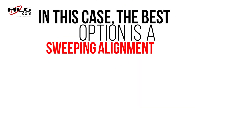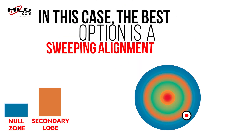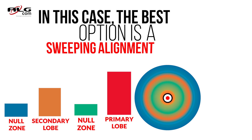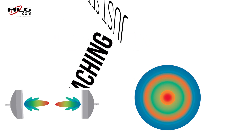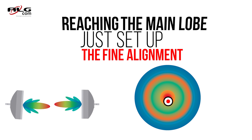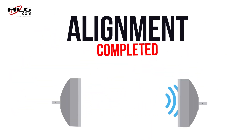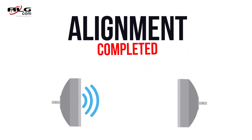In this case, the best option is a sweeping alignment, where you can reach the main lobe. After reaching the main lobe, make the final alignment. And your alignment is completed.